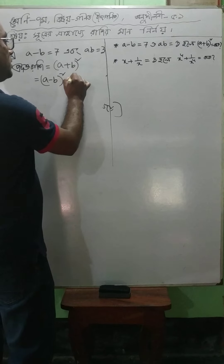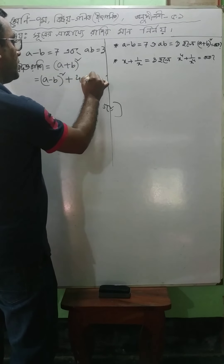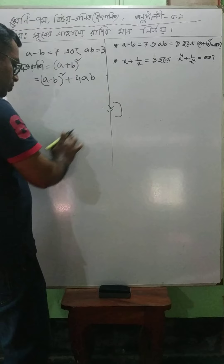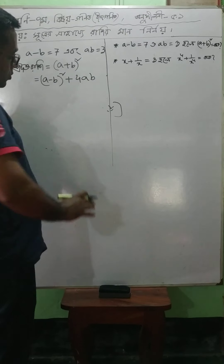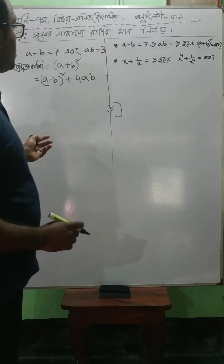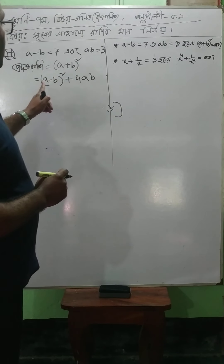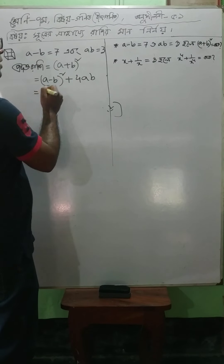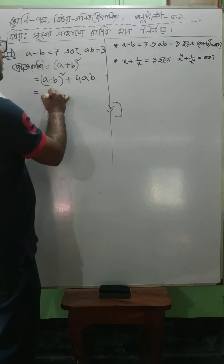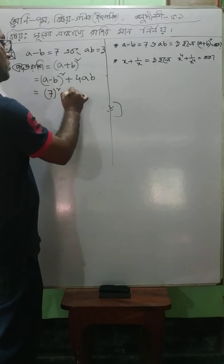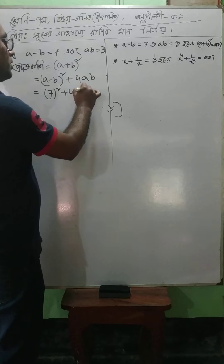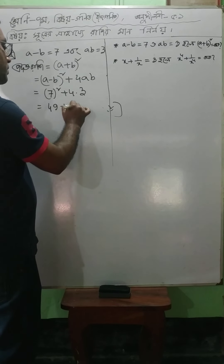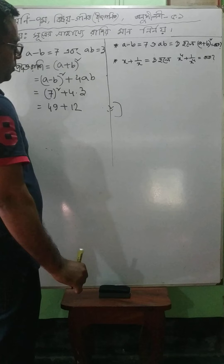Square plus 4ab. If you have any questions, please check out the practice code. a minus b whole square plus 4ab. a minus b is 7, squared is 49. 4 into ab is 1 upon 4, plus 3 squared, equals 12. The answer is 61.